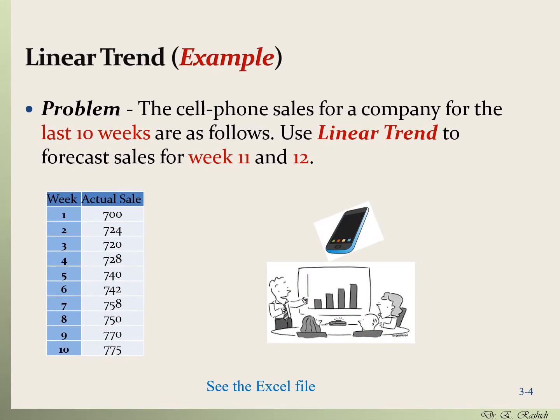Here is an example for linear trend. There is a cell phone company, and we have the sales data for ten periods — period 1 to period 10. We want to use the linear trend formula to make a forecast for period 11 and period 12. Let's do this in Excel.